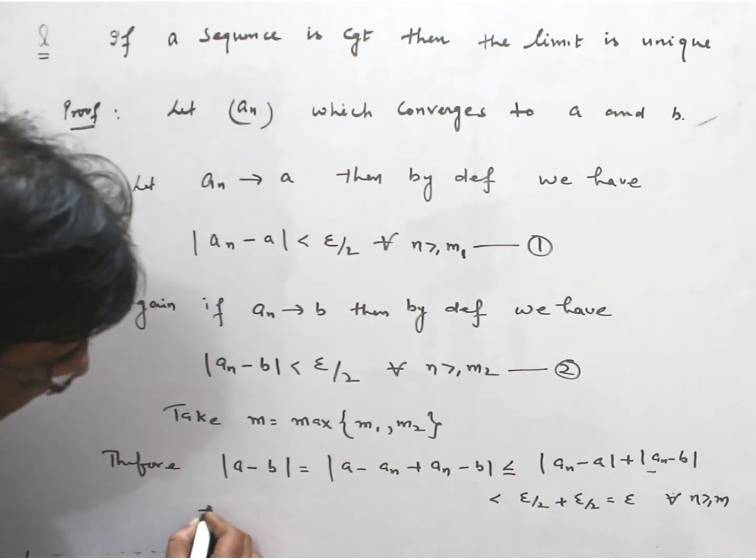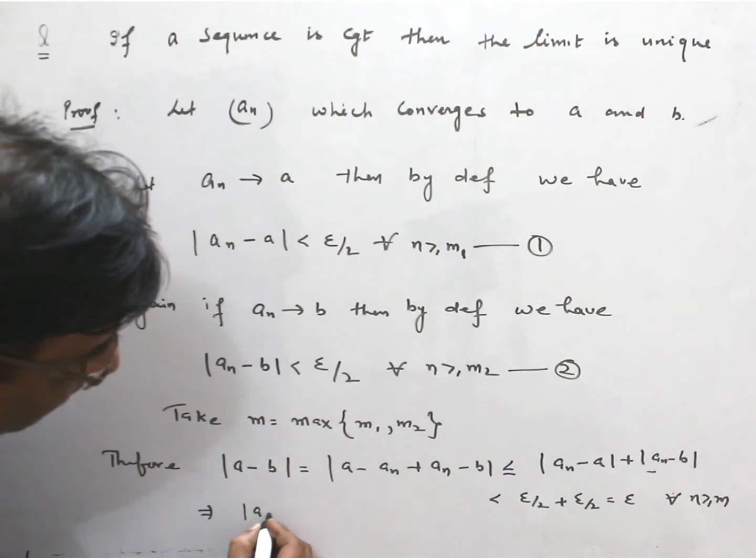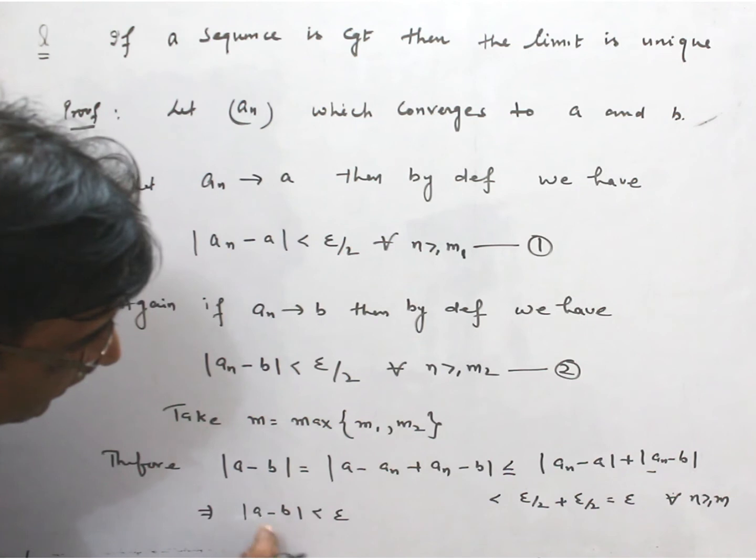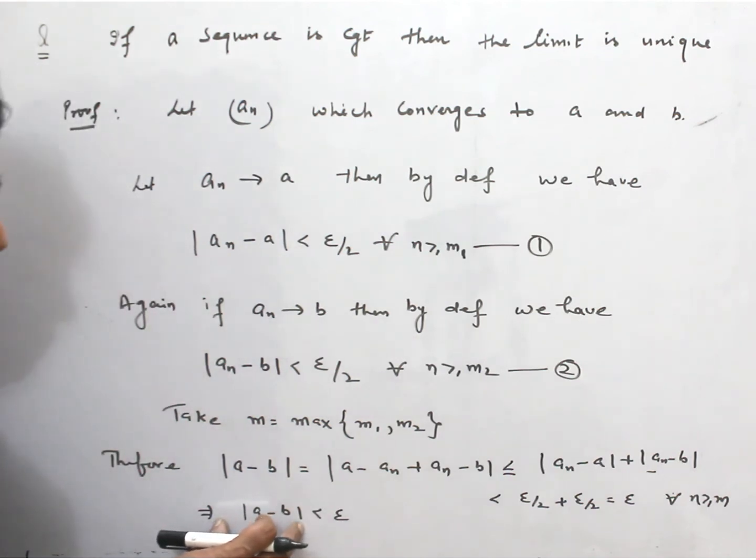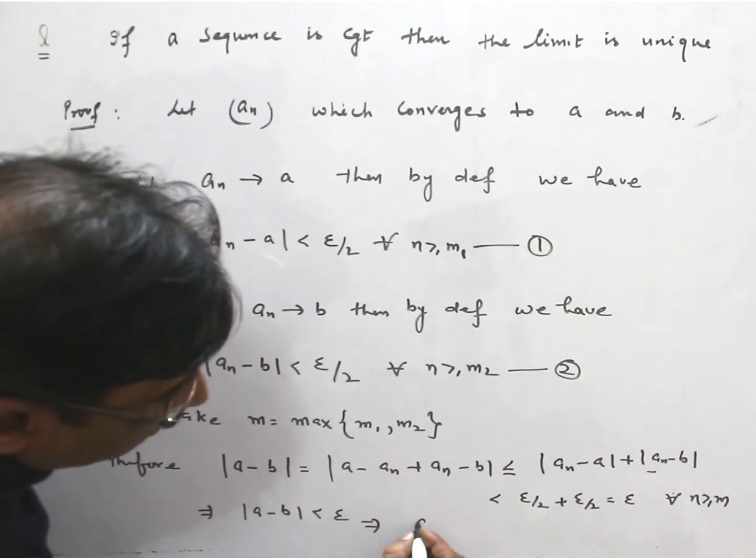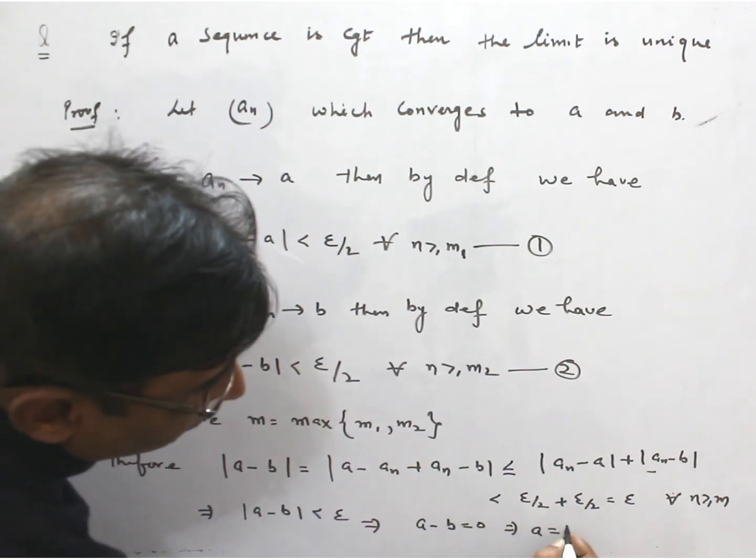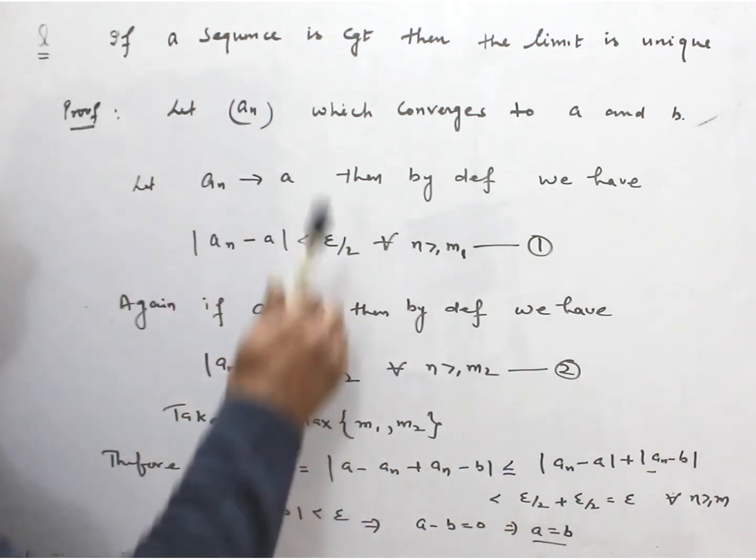That means |a - b| < ε. Now if any non-negative number is less than epsilon for all positive epsilon, then we have |a - b| = 0, which implies a = b.